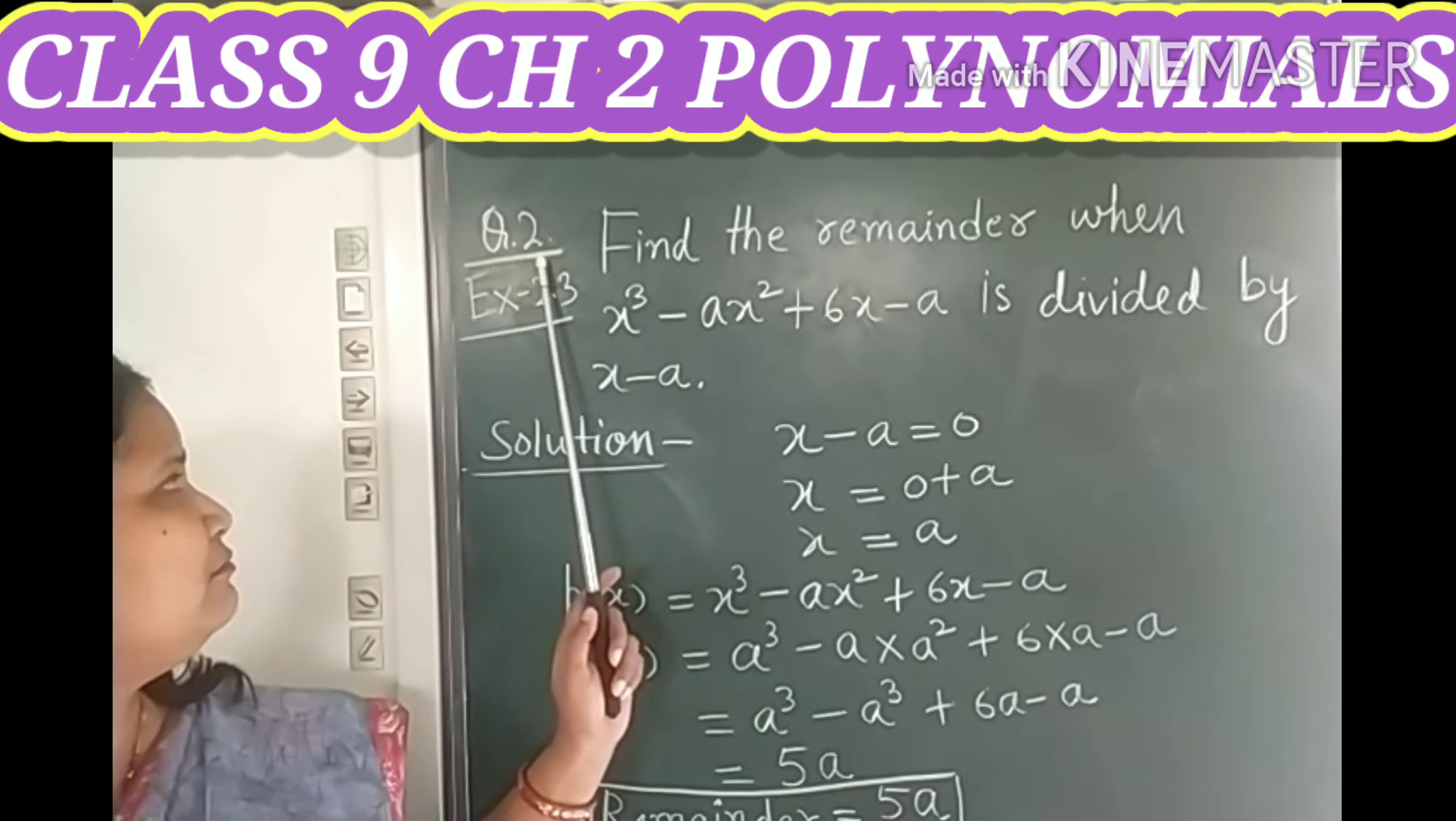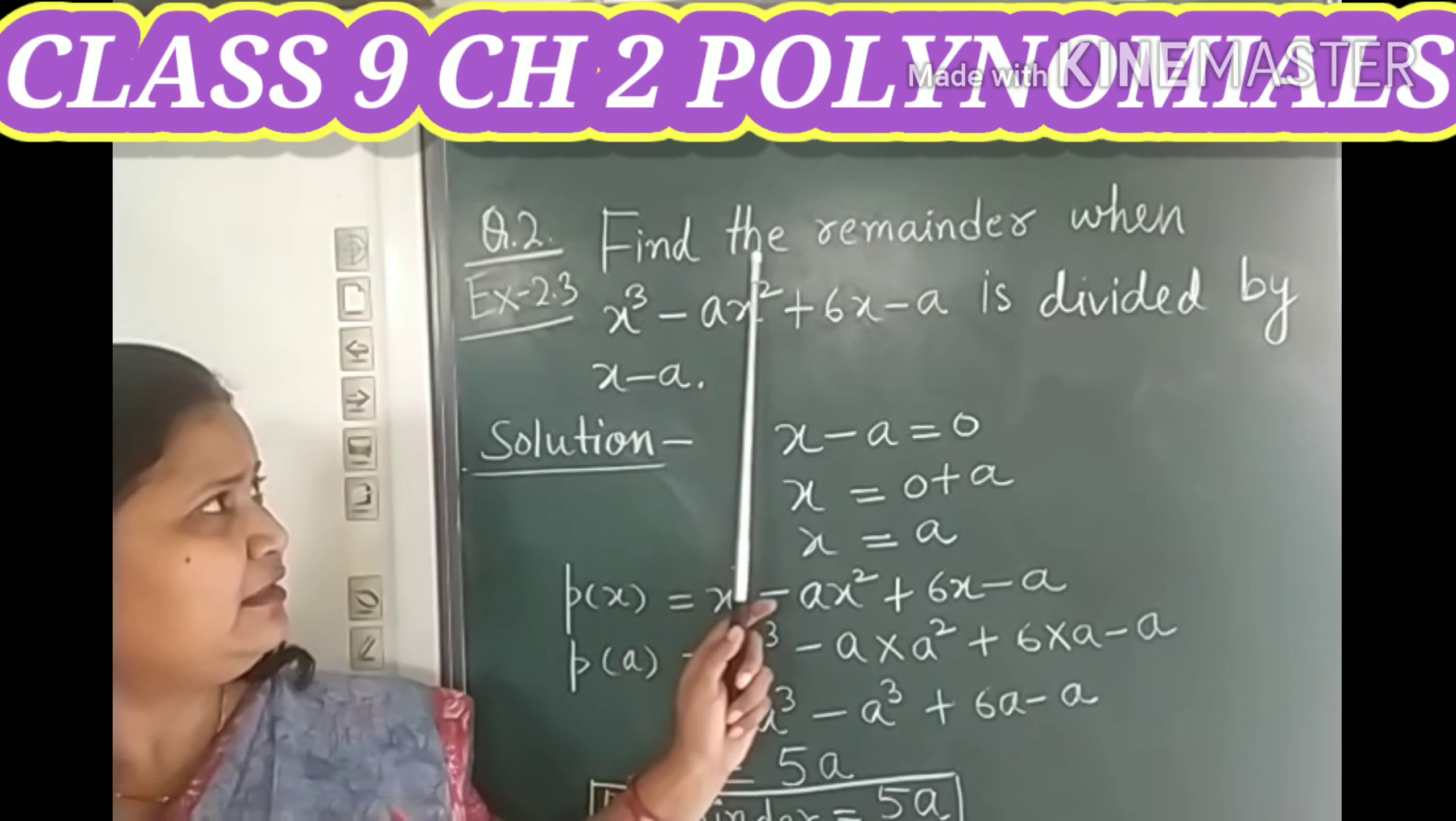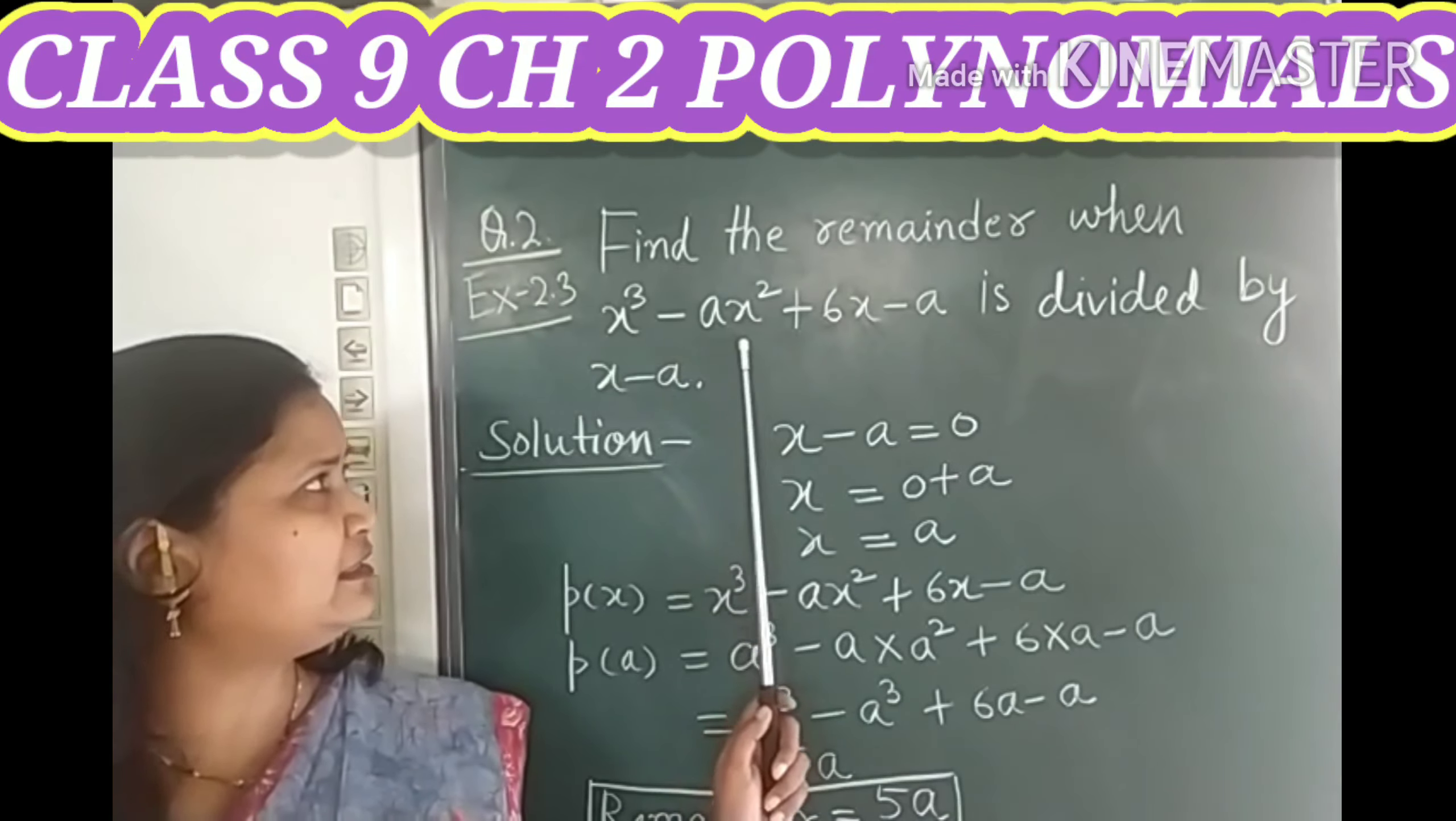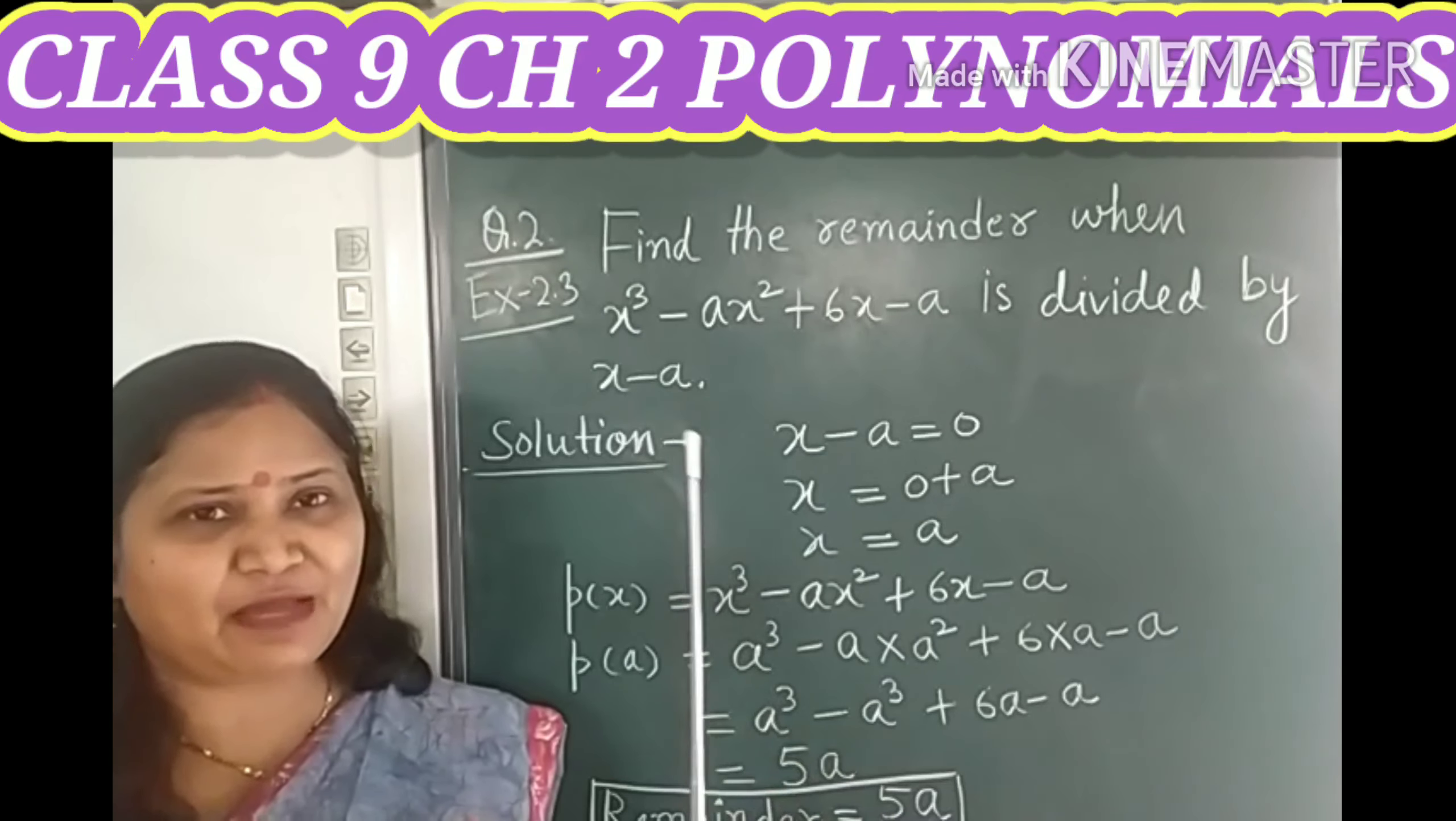This question is question number 2 of your NCERT book from exercise 2.3. Find the remainder when x³ - ax² + 6x - a is divided by x - a.